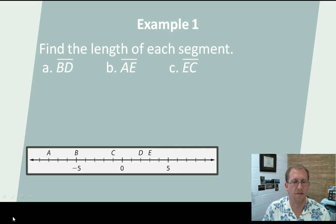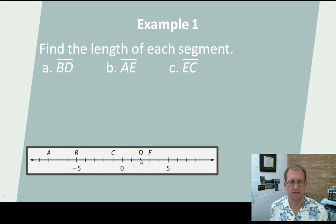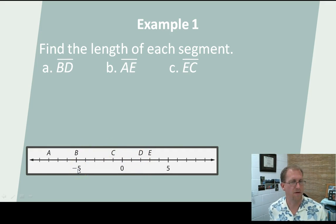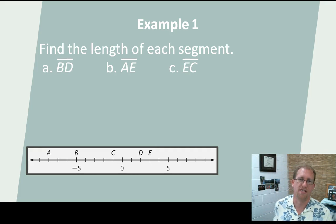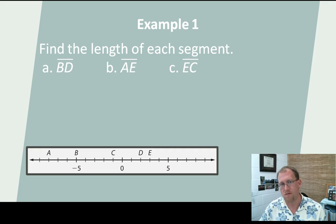Let's find the length of some segments on this example number line. Here's the origin — going left is negative, going right is positive. So this would be 5, 6, 7, 8, etc. Find the length of segment BD. B is at negative 5 and D is at positive 2. What's the difference between 2 and negative 5? You subtract: 2 minus negative 5. Remembering algebra, you add because it's minus a negative — so 2 minus negative 5 is 7. The length is 7. These are absolute values, so if you did negative 5 minus 2 you'd get negative 7, but we just take the magnitude.